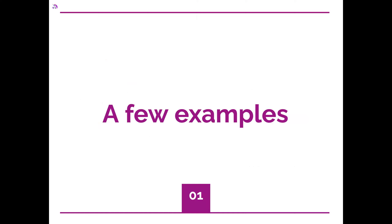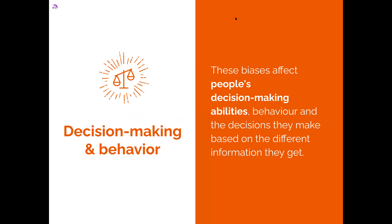We split the biases into five different categories. We'll present each category with two example biases. Let's start with decision-making and behavior biases. These are the biases that affect people's ability to make decisions — you base decisions on information you can get, and sometimes it can mislead you. This applies to you as a designer, but also to your users.